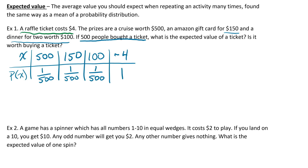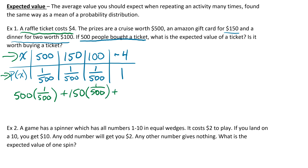At this point we're ready to do our expected value. Just like finding the mean of a probability distribution, we take each value and multiply it by its probability. So it's going to be 500 times 1/500, plus 150 times 1/500, plus 100 times 1/500, then minus 4 times 1. Put this all in your calculator, and make sure you put parentheses around each fraction.